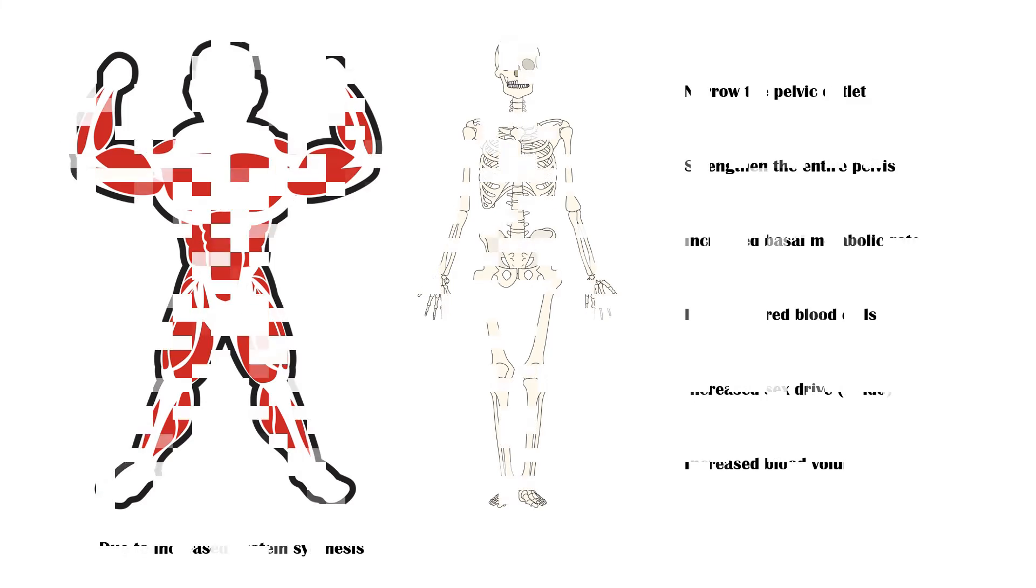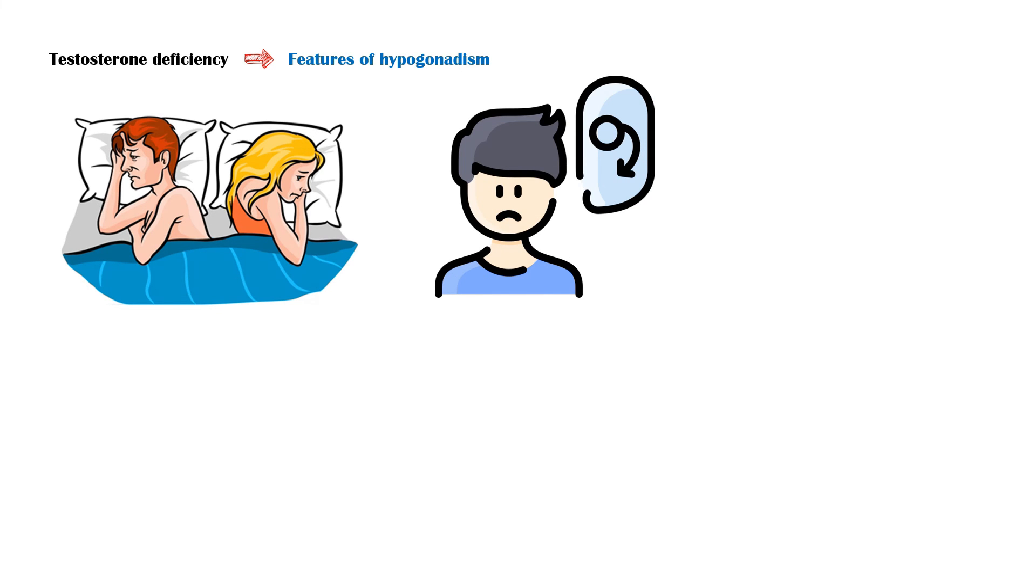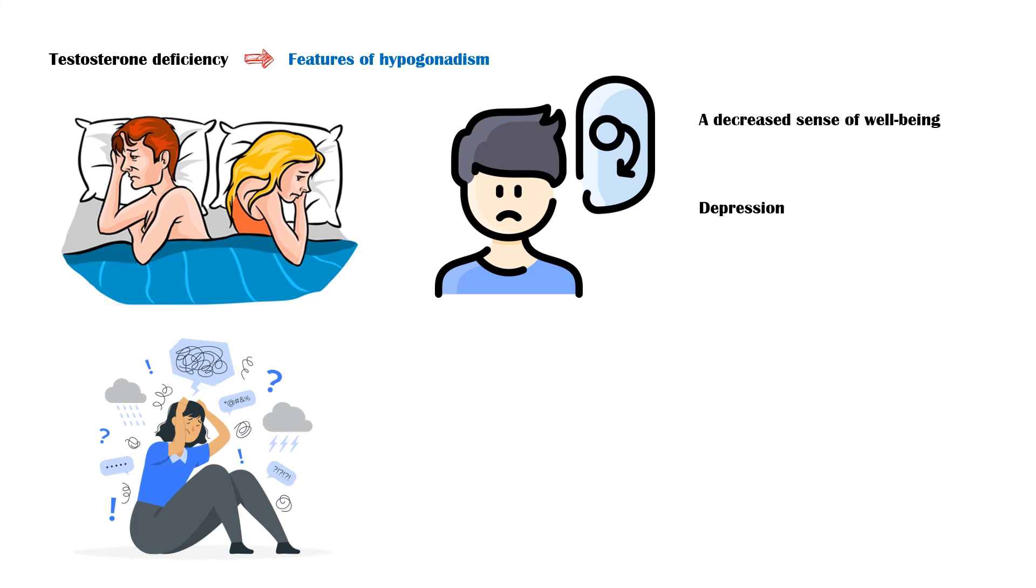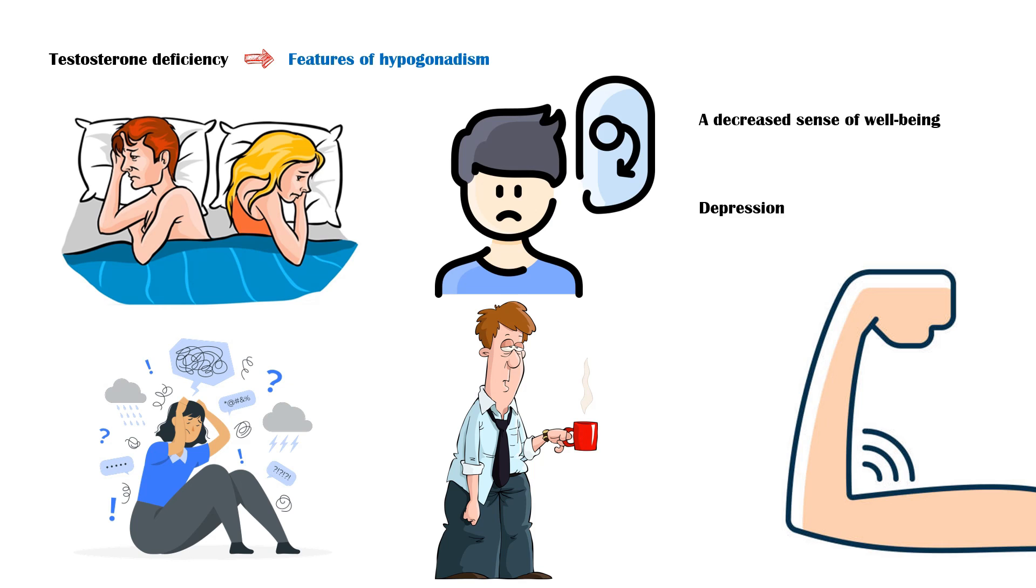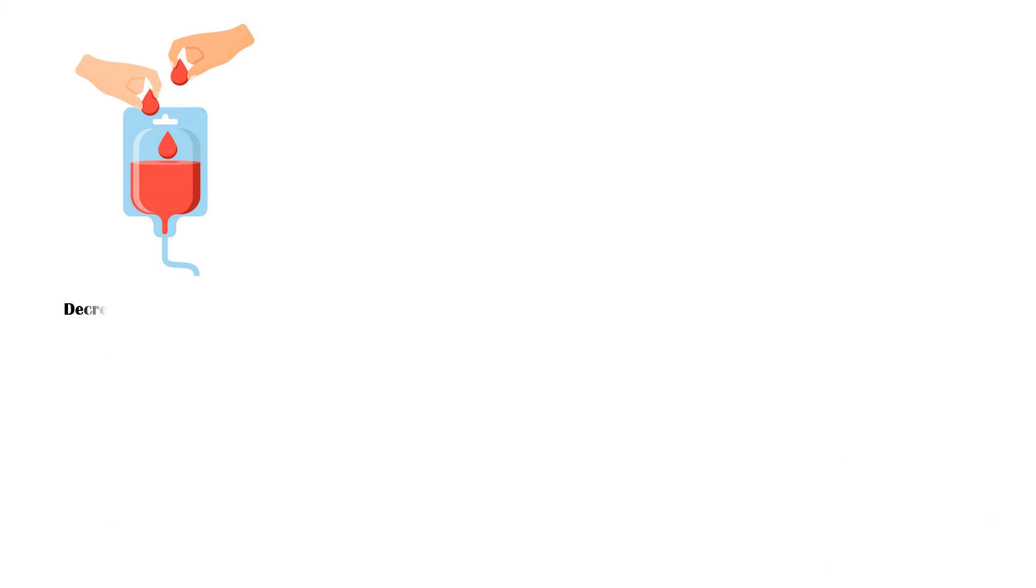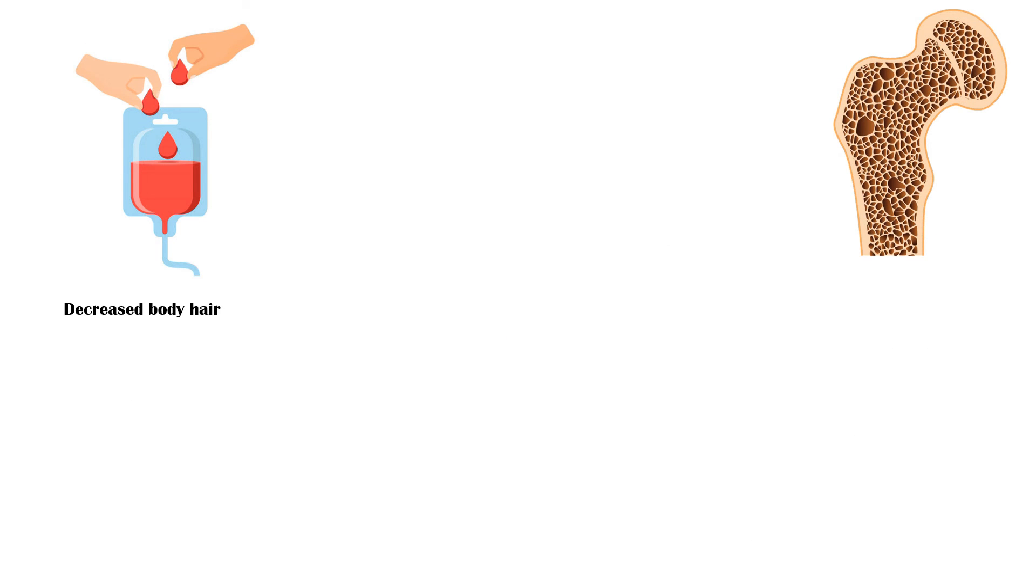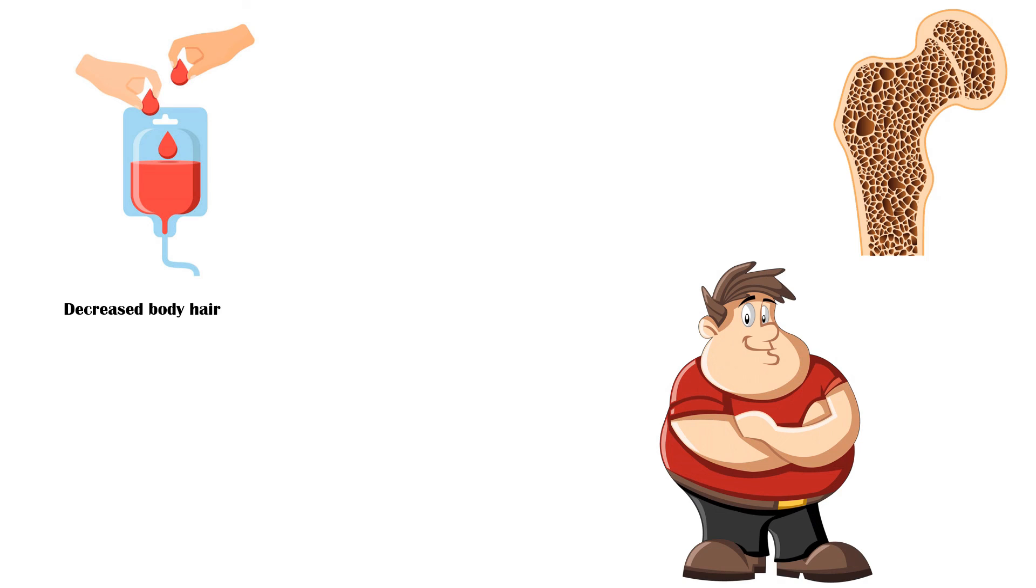As already mentioned, deficiency of testosterone will lead to features of hypogonadism. Some of them include reduced sex drive, erectile dysfunction, a decreased sense of well-being, depression, difficulty in concentration and memory problems, fatigue, loss of muscle strength, mild anemia, decrease in body hair, osteoporosis, increased body fat, gynecomastia (or abnormal development of breast in males), and infertility.